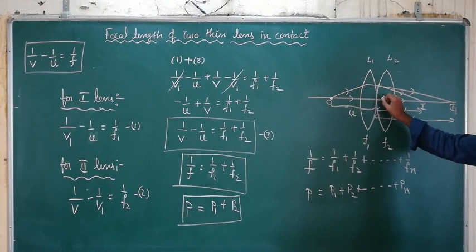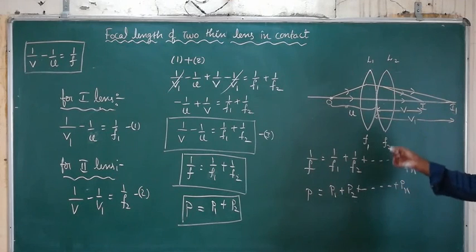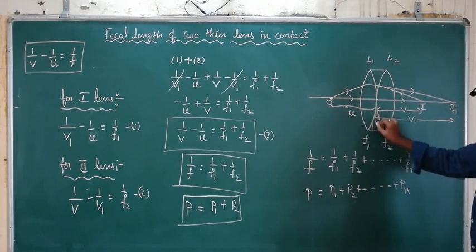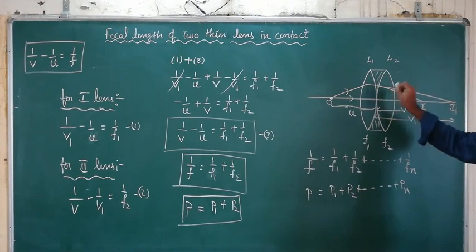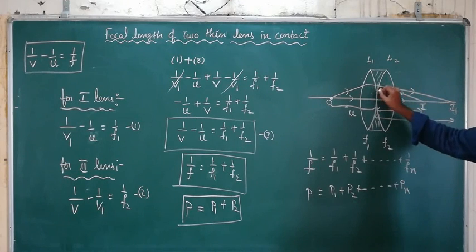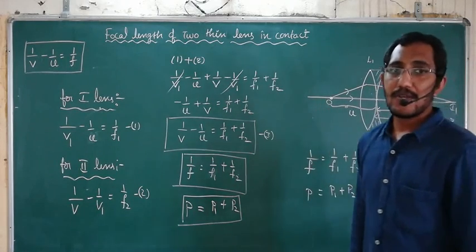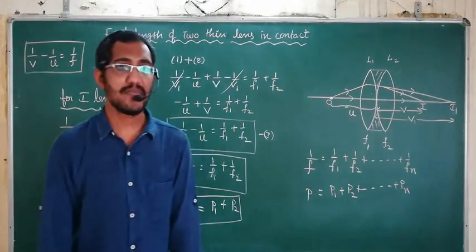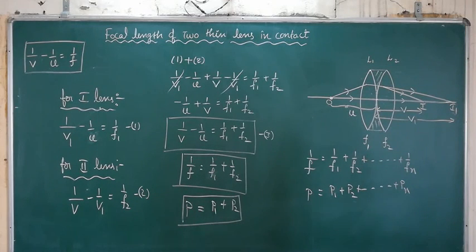Even if the two lenses are not in physical contact but placed coaxially, there is a concept for effective focal length — important from an entrance exam point of view. For instance, if the gap between two coaxial lenses is filled with a liquid of some refractive index, the effective focal length changes. Questions may ask for the ratio of focal lengths before and after filling the liquid. This is the topic of focal length of two thin lenses in coaxial contact.